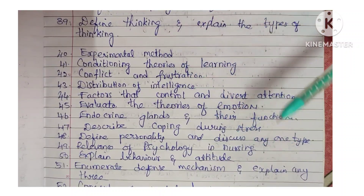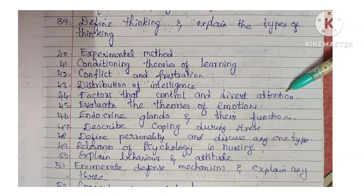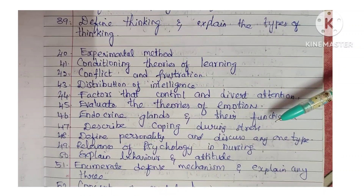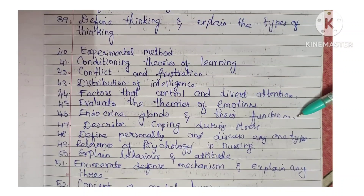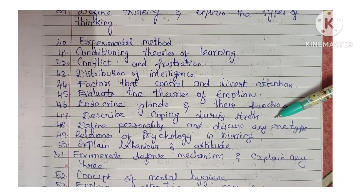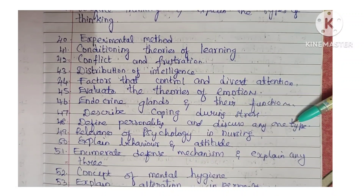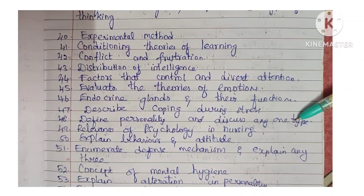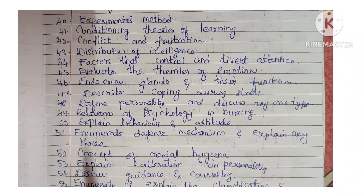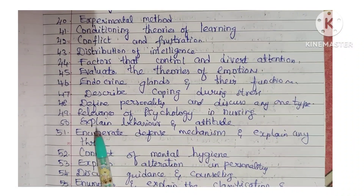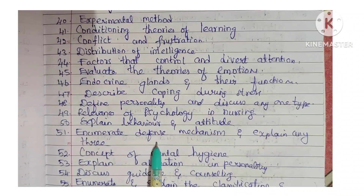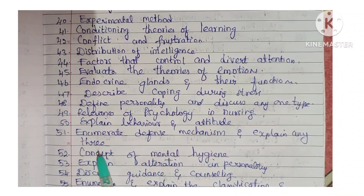Next: distribution of intelligence. Next: factors that control and divert attention. Next: evaluate the theories of emotions. Next: endocrine glands and their function. Next: describe coping during stress. Next: define personality and discuss any one type. Next: relevance of psychology and methodology in nursing. Next: explain behavior and attitude. Next: enumerate defense mechanisms and explain any three.